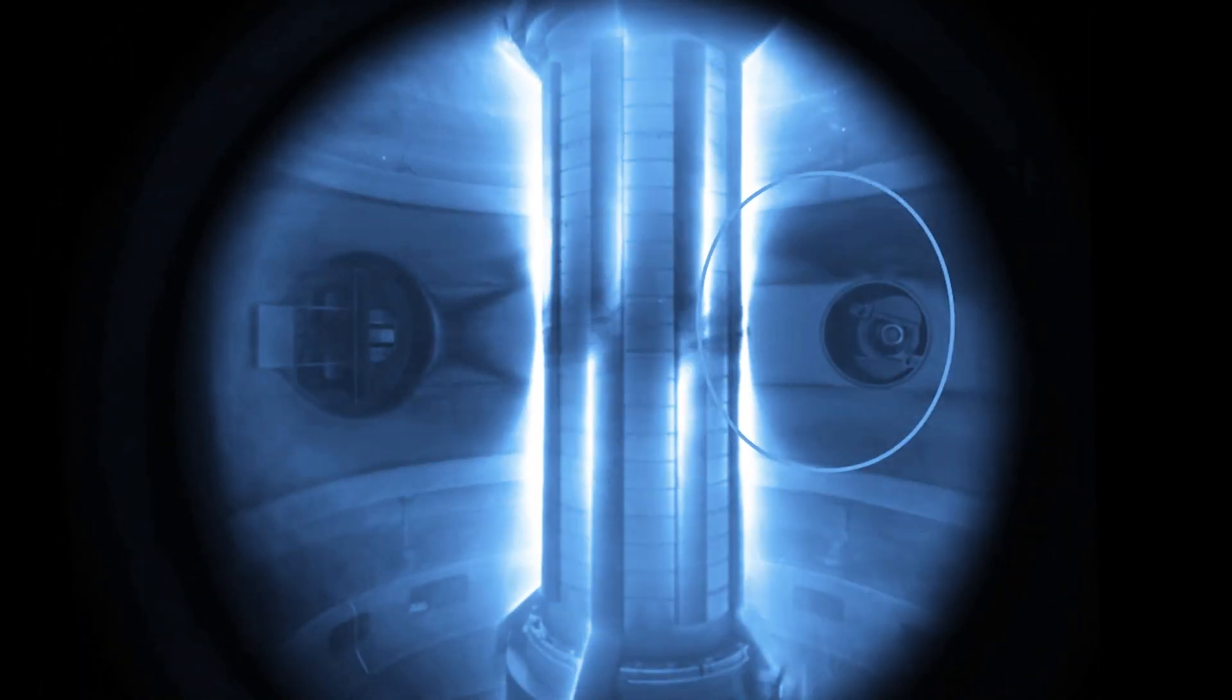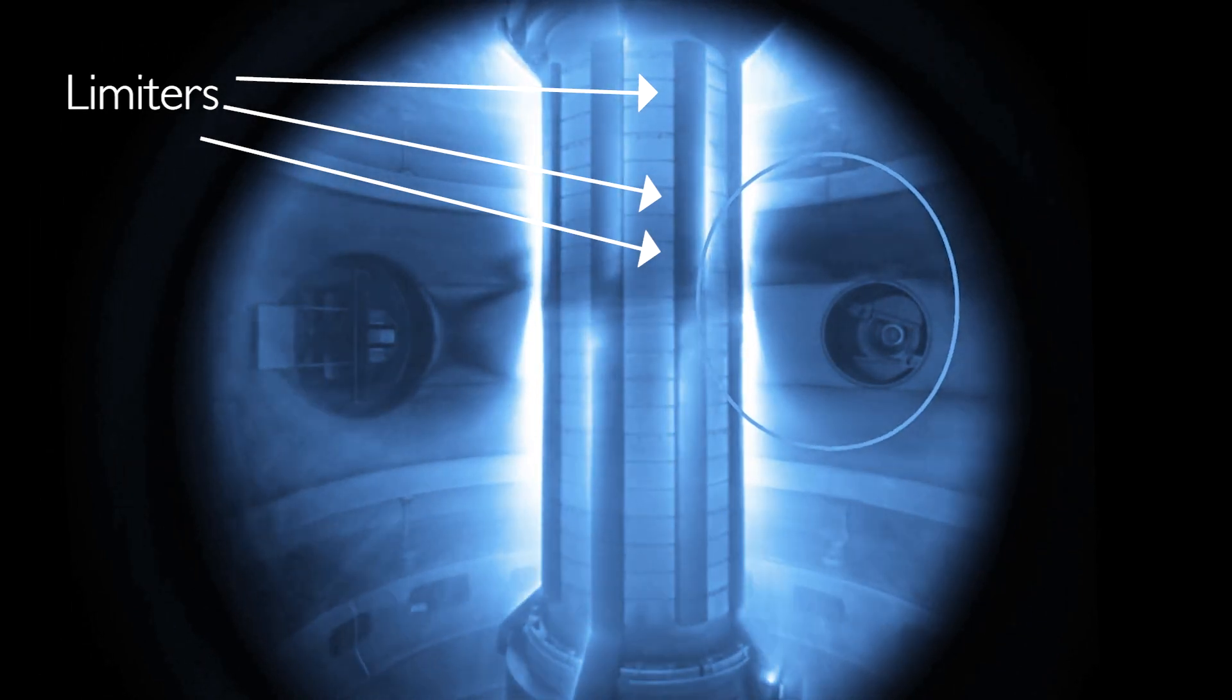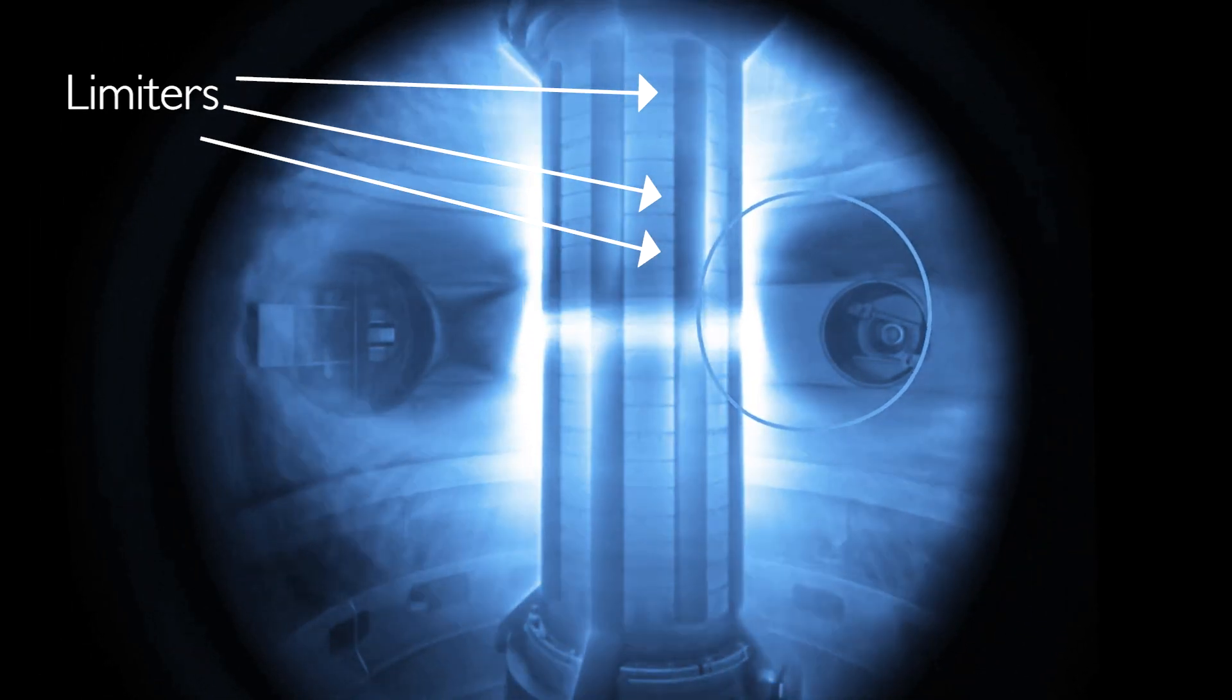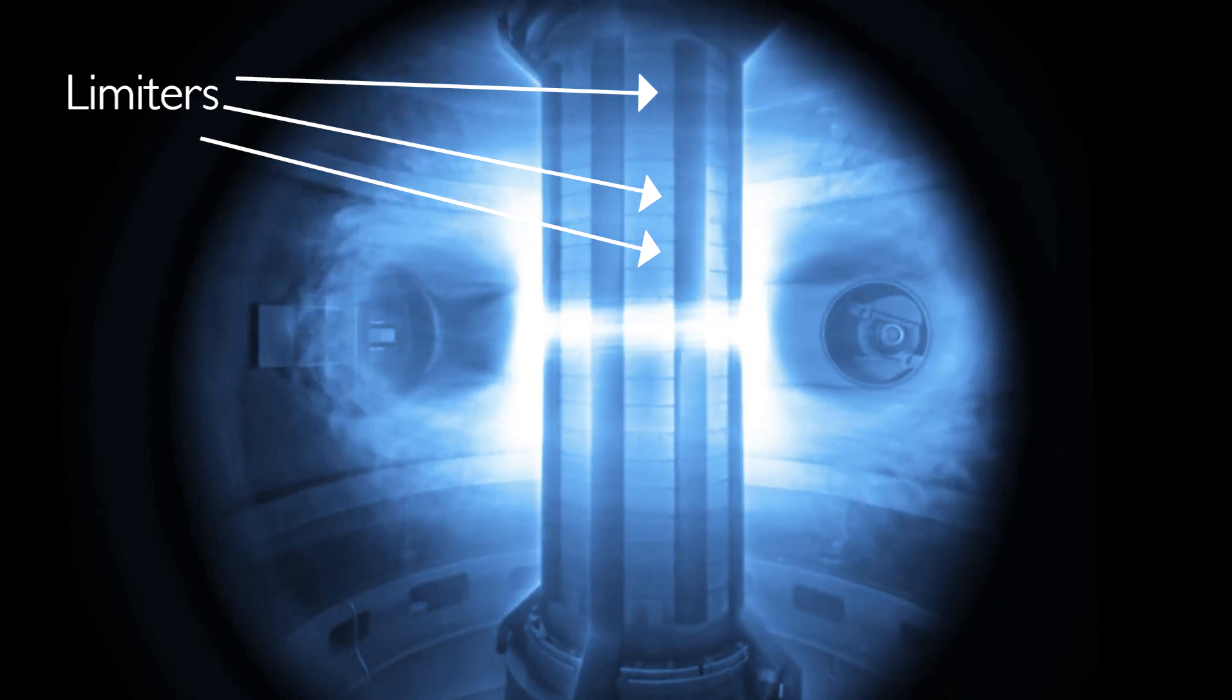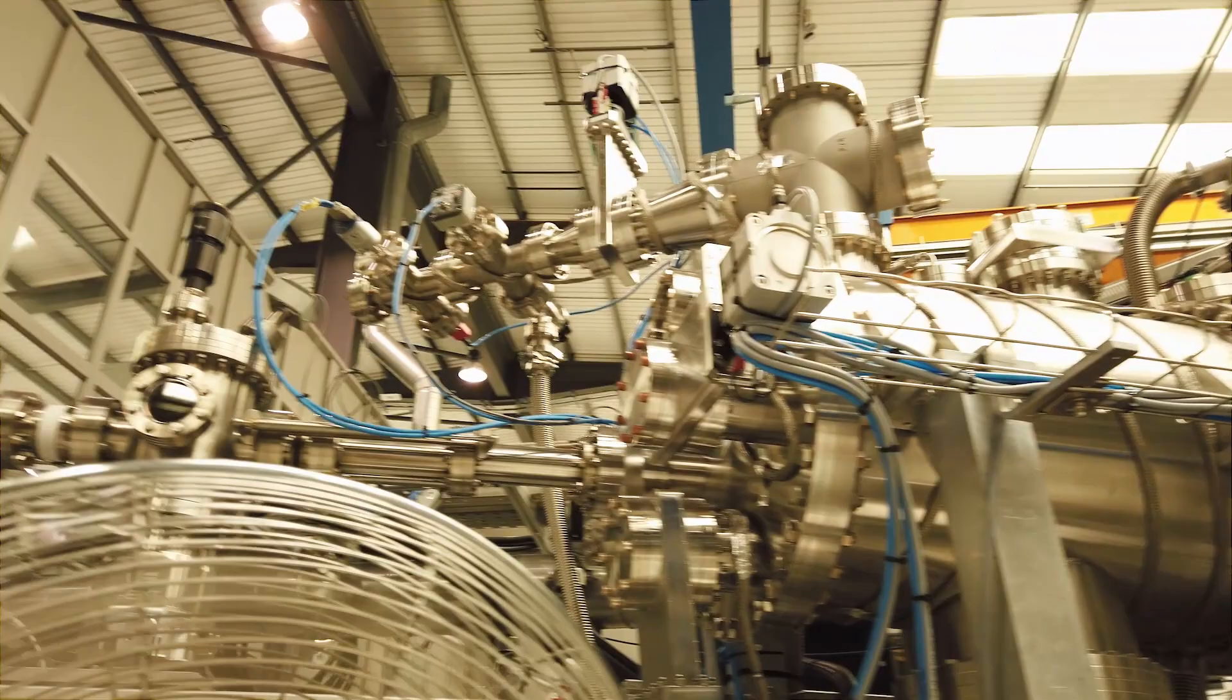In ST-40 we have special tiles on the center column that are made of carbon, and these can handle higher heat loads. So if the plasma hits the carbon it cools down very quickly because some impurities get sputtered out, and that causes the plasma to radiate away. It also stops us damaging the vessel, and especially it protects the very fragile bits of diagnostic equipment.